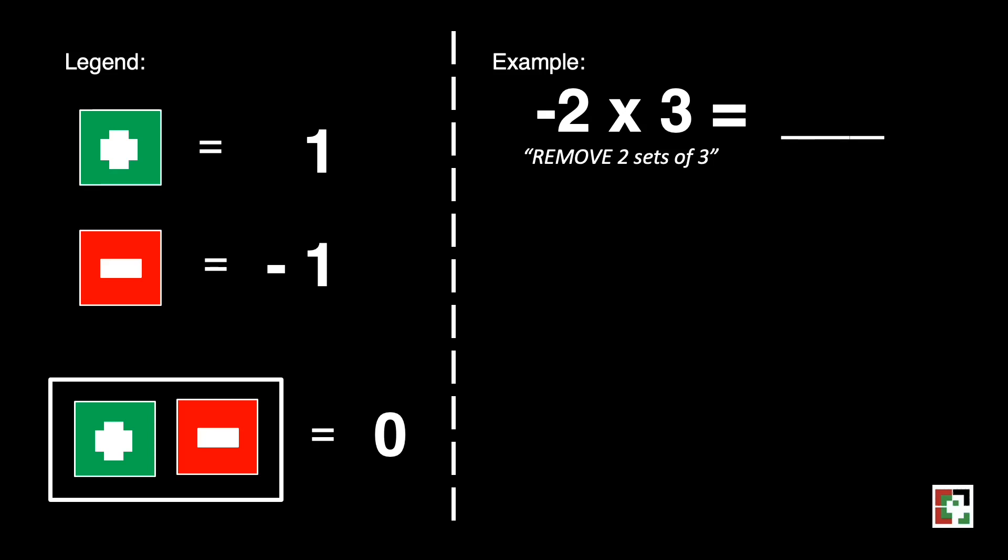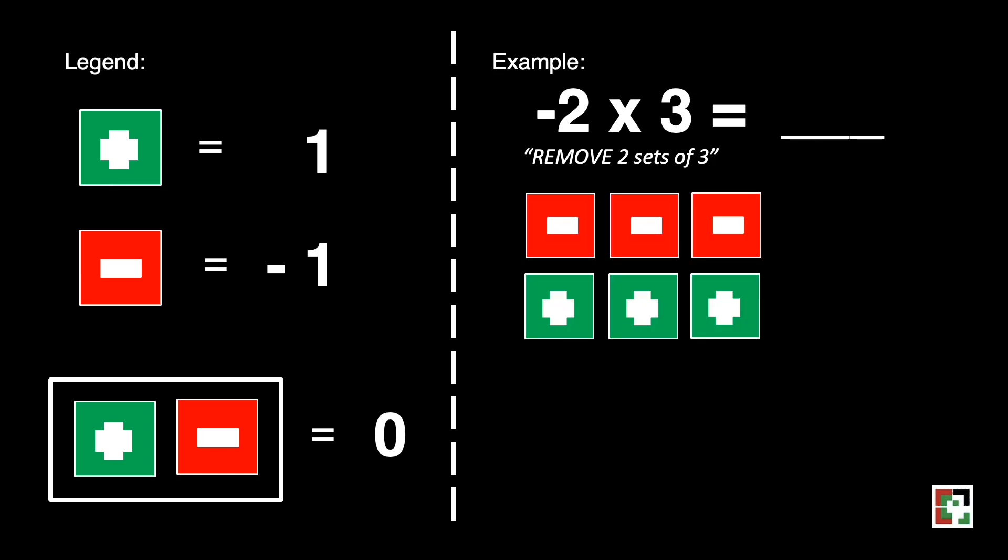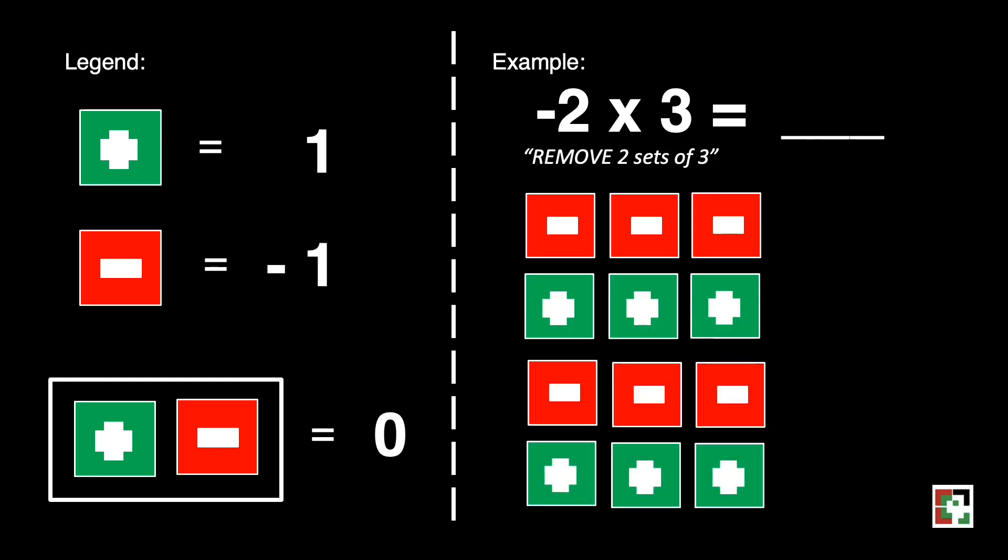We'll be having two sets of three zero pairs. That's one and another one. Back to the question, we will remove two sets of positive three. So, we'll be removing the greens.